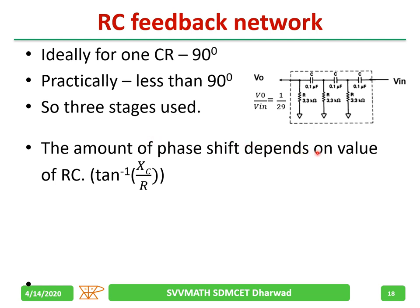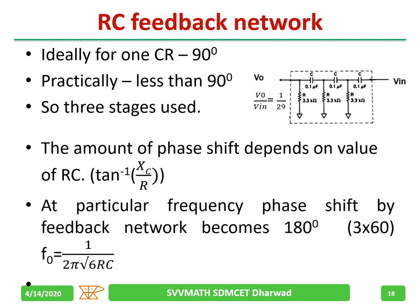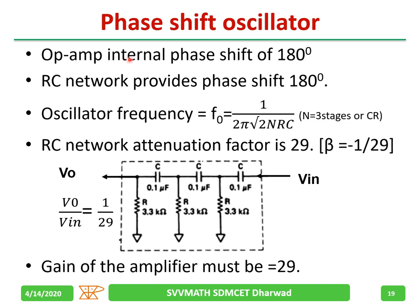The amount of phase shift depends on the values of R and C, given by tan⁻¹(Xc/R). At a particular frequency the phase shift by the feedback network becomes 180°. Each RC combination gives 60°, and with three stages you get 180°. The resonant frequency F₀ is given by 1/(2π√6·RC). The op-amp gives 180° and the RC network gives 180°, giving a total of 360° — hence oscillations occur.